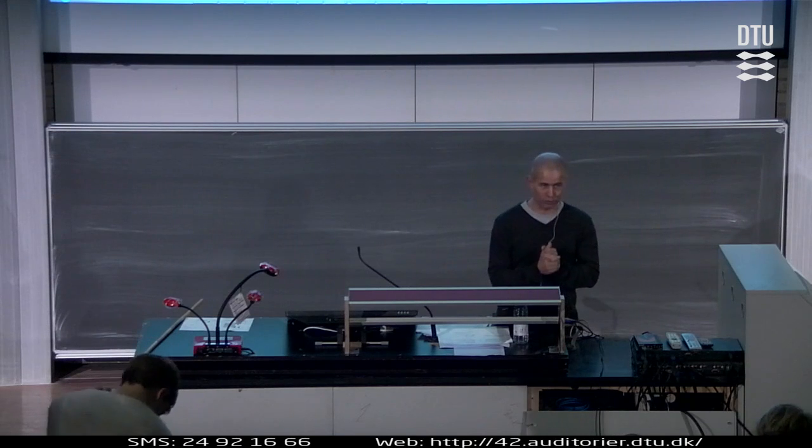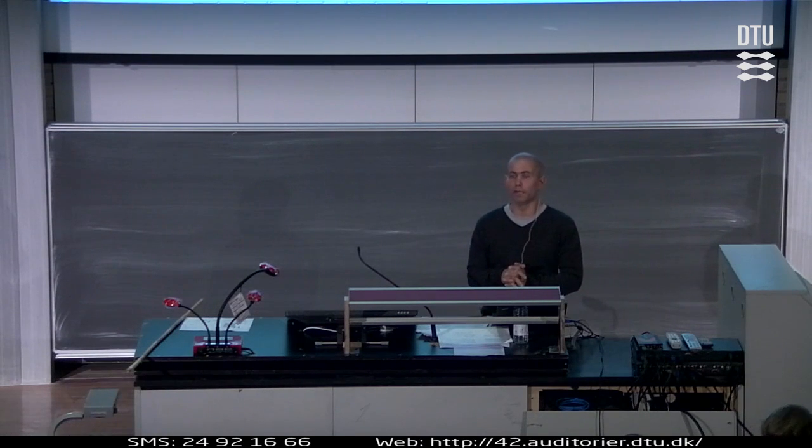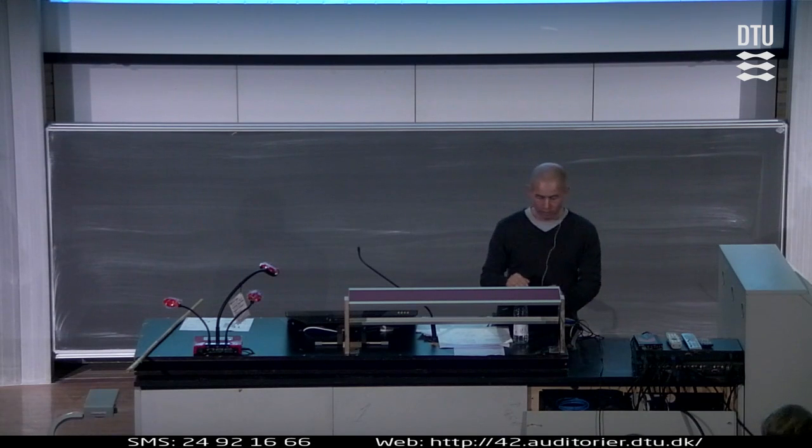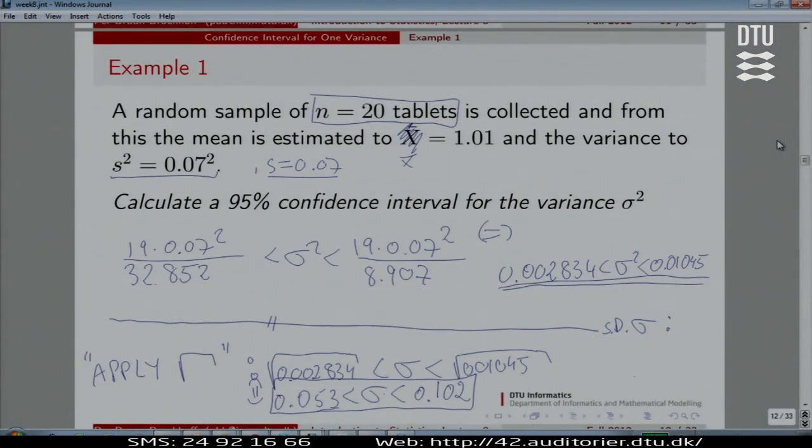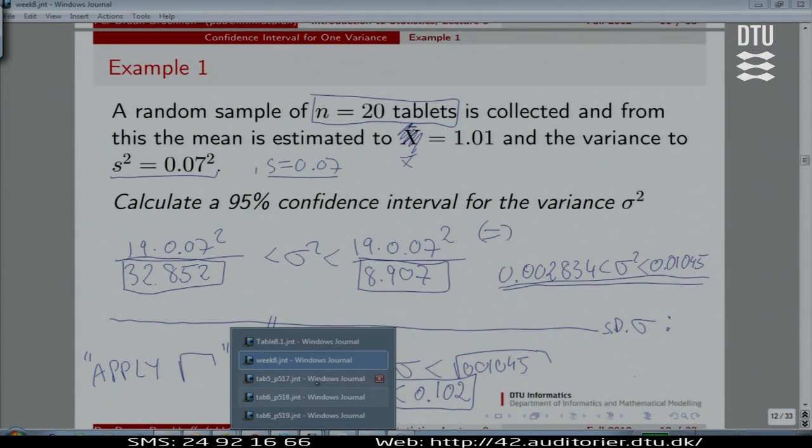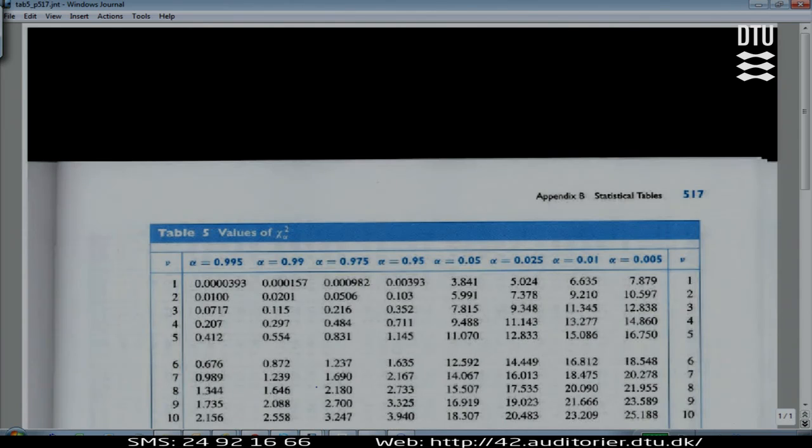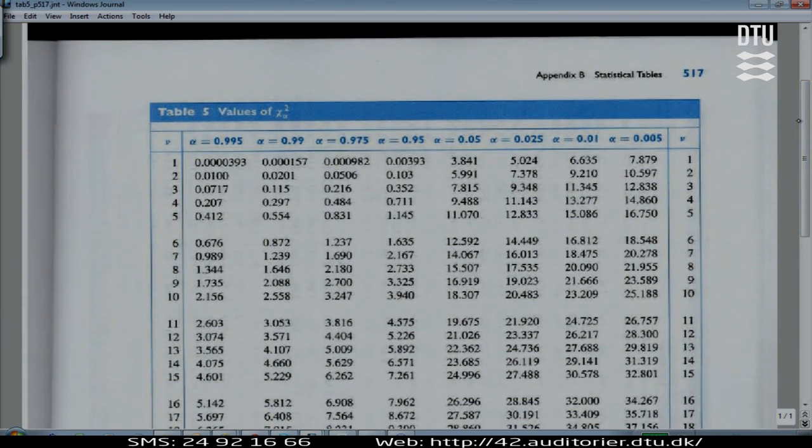I forgot what I promised to do. I forgot that I was going to find these critical values. As we could also call them here, I found them in R, but I did plan and promise to also show them to you in the table. So, let's just do that, as I promised. We could also find the critical values for the confidence limit in table 5 in the book. Table 5 are values of chi-square alpha.